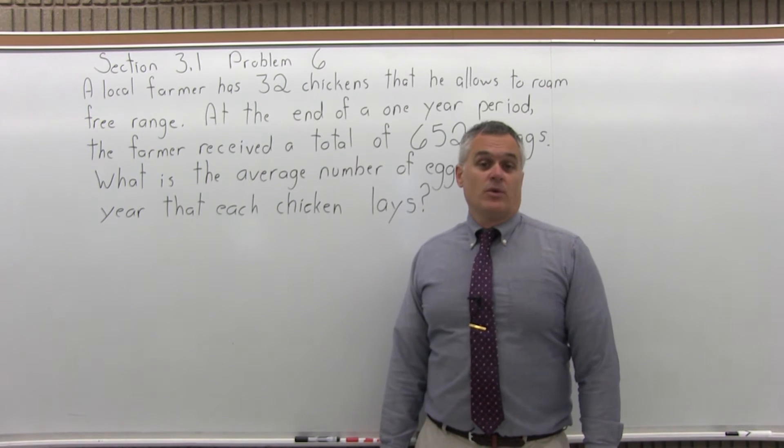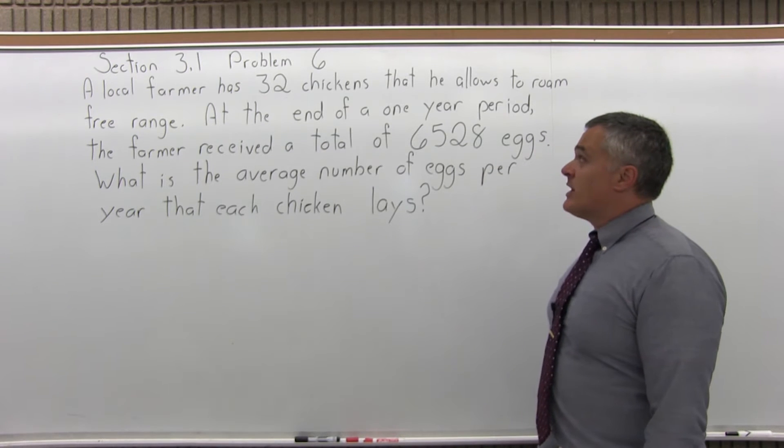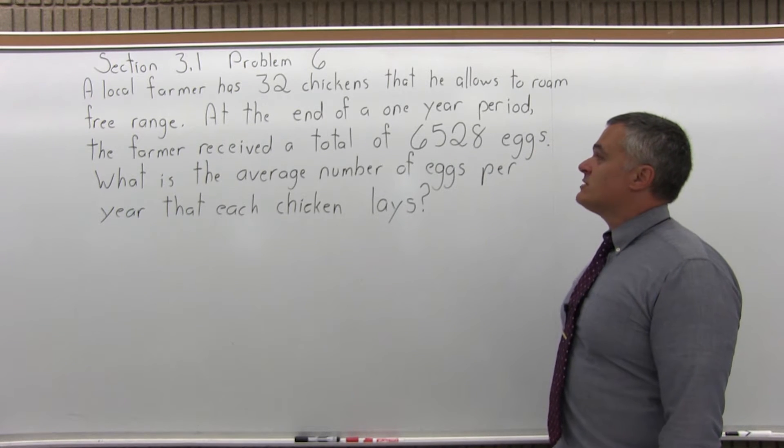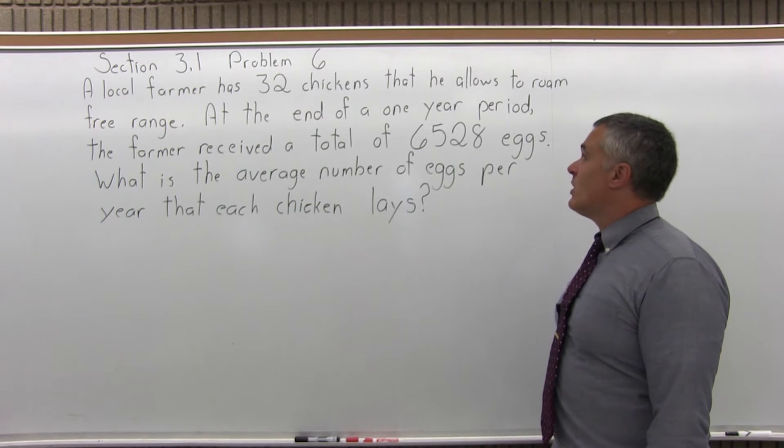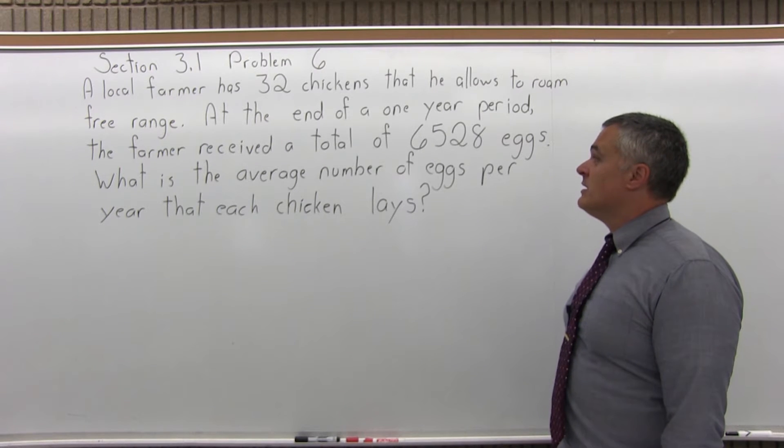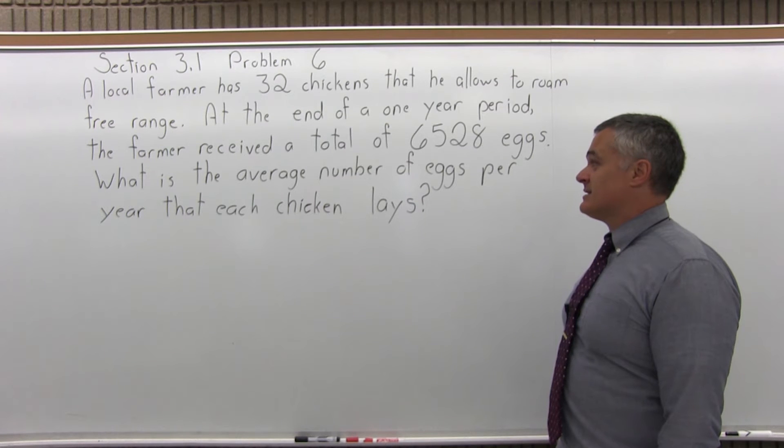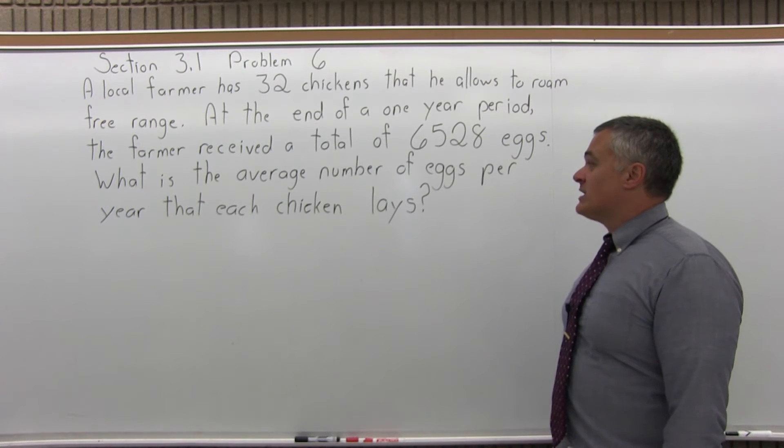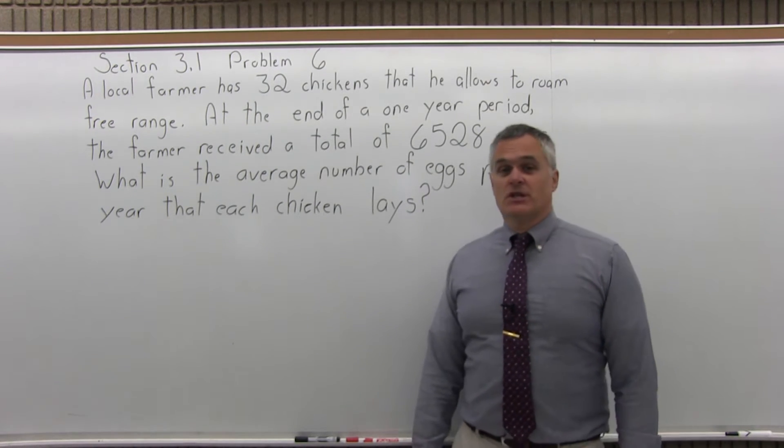This is Section 3.1, Problem 6. It says a local farmer has 32 chickens that he allows to roam free range. At the end of a one-year period, the farmer received a total of 6,528 eggs. What is the average number of eggs per year that each chicken lays?